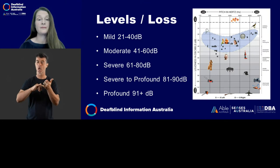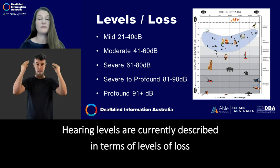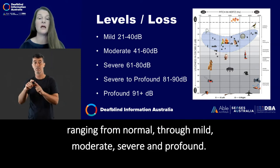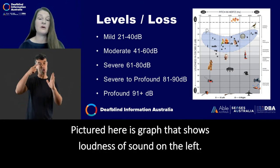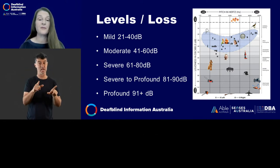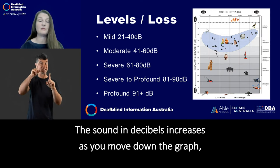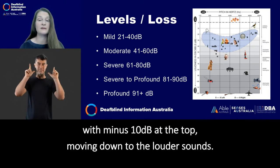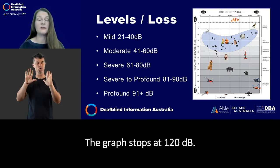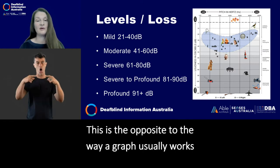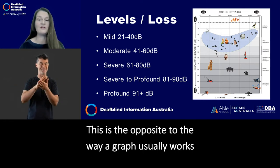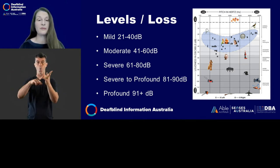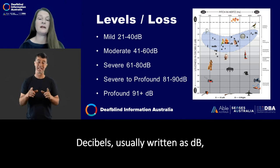Levels of loss. Hearing levels are currently described in terms of levels of loss, ranging from normal through mild, moderate, severe and profound. Pictured here is a graph that shows loudness of sound on the left. The sound in decibels increases as you move down the graph, with minus 10 decibels at the top moving down to the louder sounds. The graph stops at 120 decibels. This is the opposite to the way a graph usually works, but is how hearing is mapped onto a graph or audiogram.